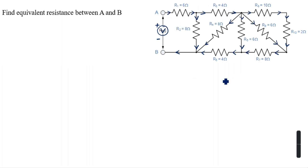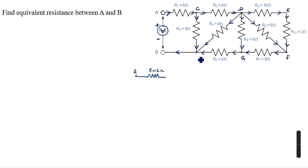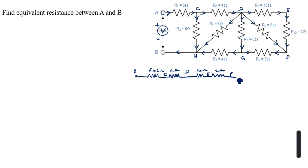Now how will we rearrange this drawing? Starting from here — the current goes this way. We start from A, draw the line — this is R1 equal to 6. We will mark nodes C, D, E, F, G, H. Here is C, after that: here is 4 ohm, here is 10 ohm, this is D, this is 2 ohm, this is E.